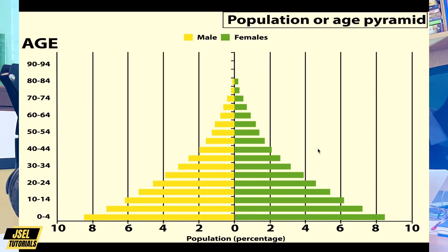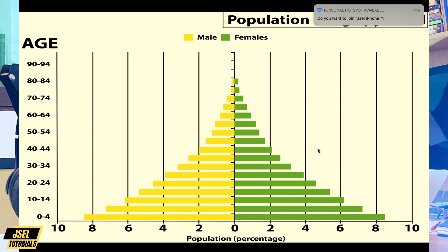When you look at the graph, it starts from the youngest at the bottom and the oldest at the top. It is called a population pyramid because when the population is growing, more babies are born, and as people age and die, the numbers narrow toward the top — reaching the narrow part of the pyramid.